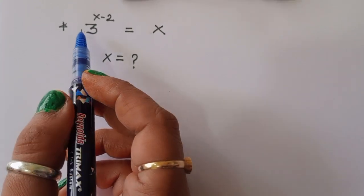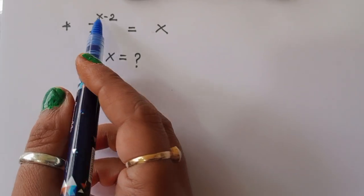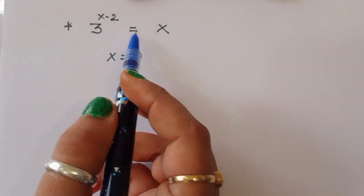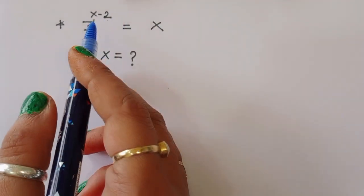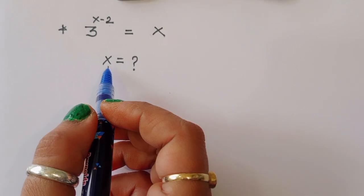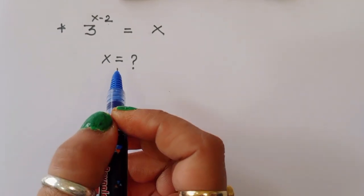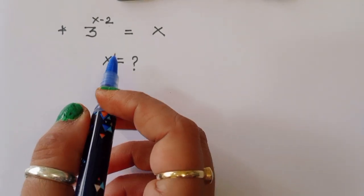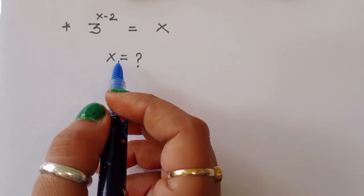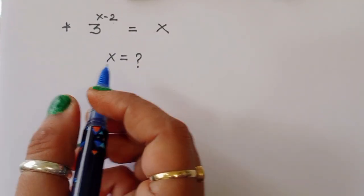The question is given: 3 power (x minus 2) is equal to x. We have to find out the value of x. Let's see the solution.